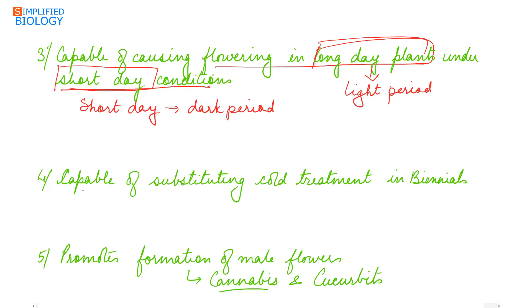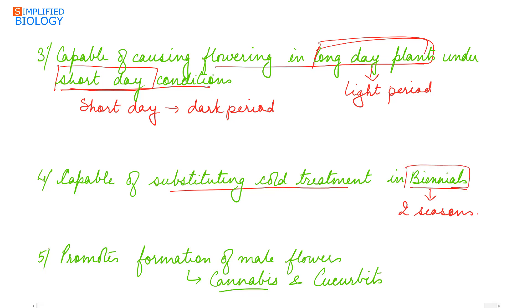Gibberellin is capable of substituting cold treatment in biennials. Biennials are plants that complete their life cycle in two seasons — in the first season they grow vegetatively, requiring cold treatment, after which they flower and fruit in the next season. When gibberellin is provided to these biennial plants, they flower in the same season, thus substituting the cold treatment.